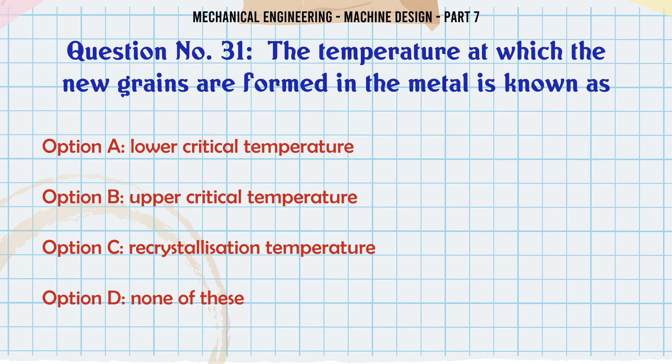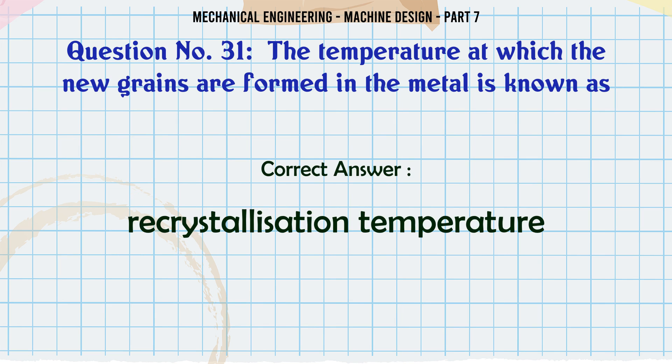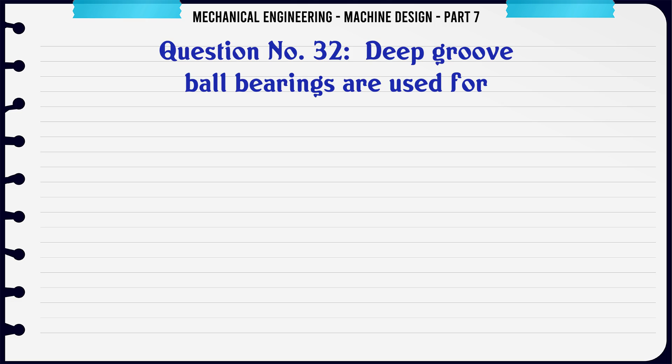The temperature at which new grains are formed in the metal is known as: a) lower critical temperature, b) upper critical temperature, c) recrystallization temperature, d) none of these. The correct answer is: recrystallization temperature.